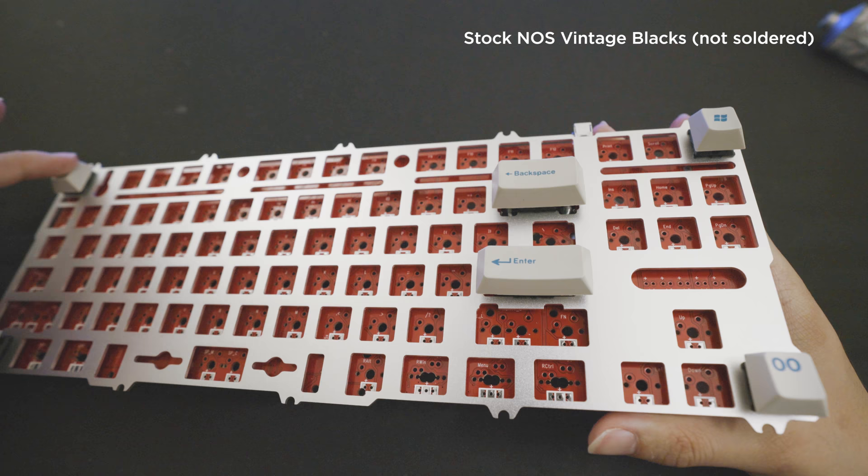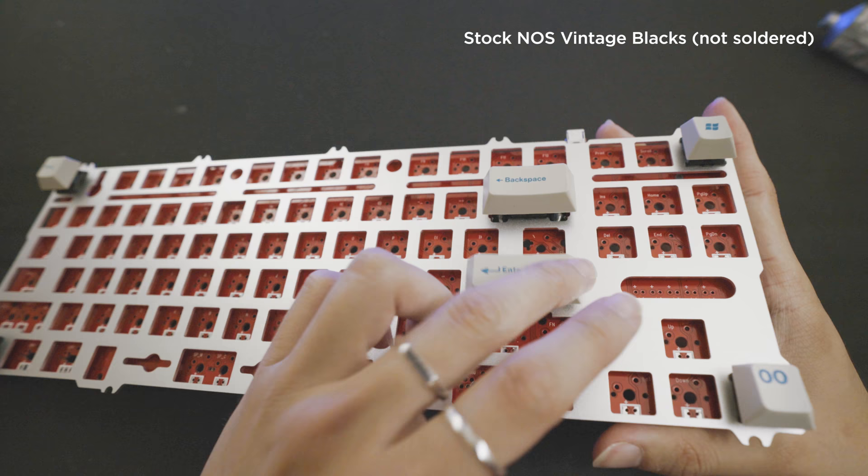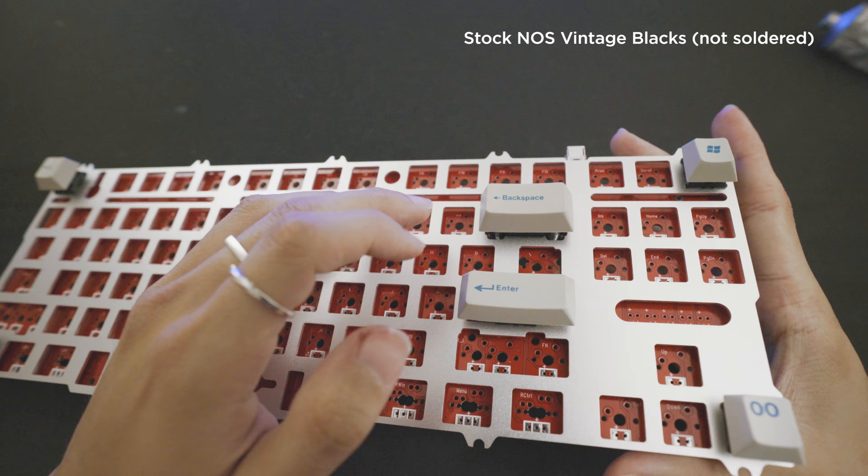So now after band-aid modding, lubing and clipping, here's what the difference sounds like. This is un-lubed. And this is lubed, clipped, and band-aid modded.